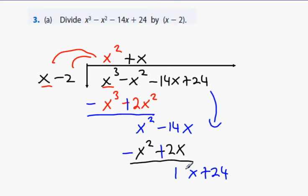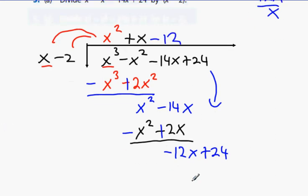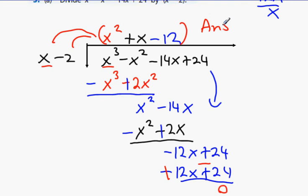Now, negative 12x divided by x? Minus 12 times. And then what do we get? Minus 12x plus 24. Then what happens? Change the sign. Zero. So our answer here is this here. Have you enough of that?